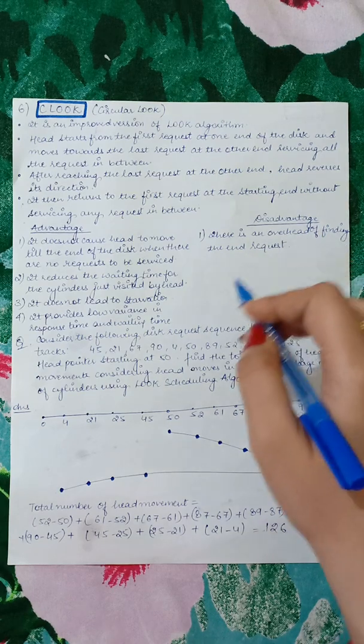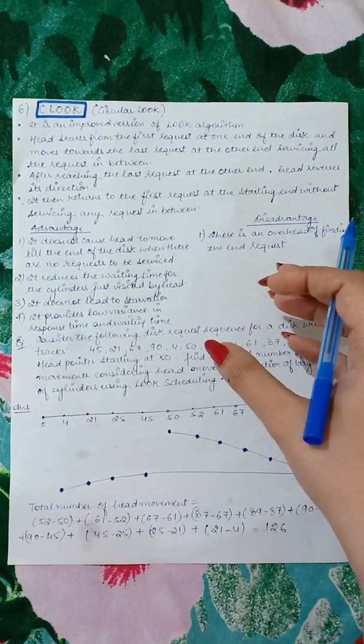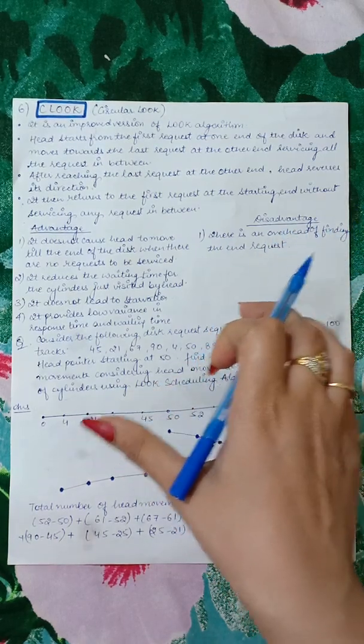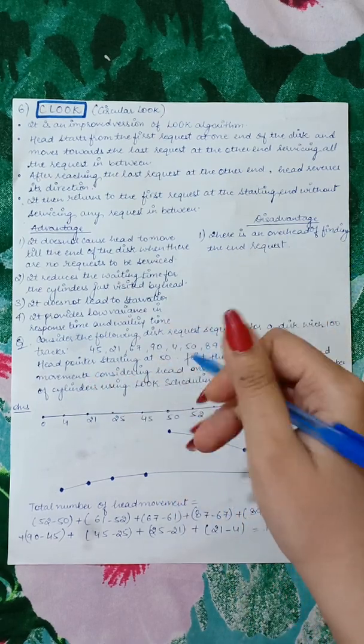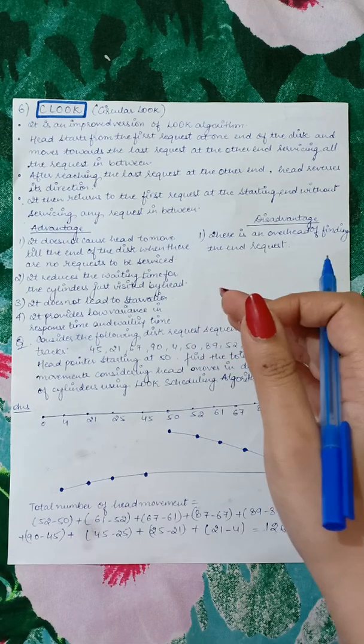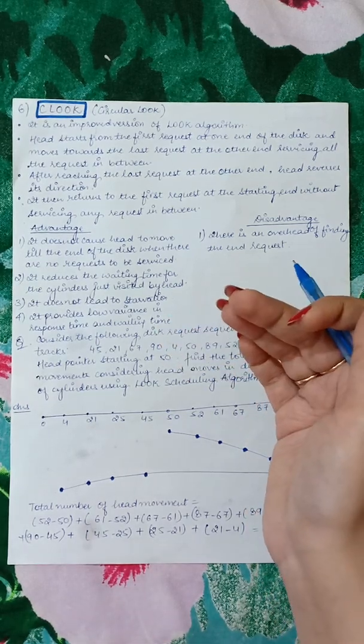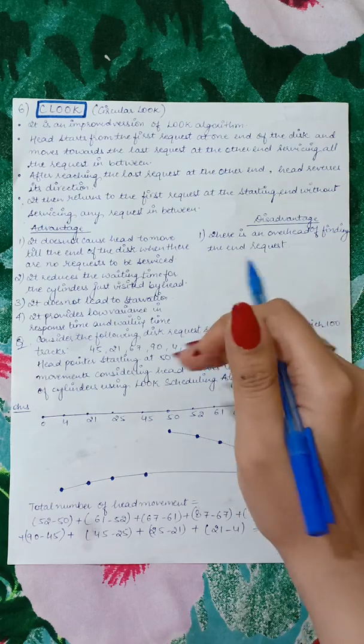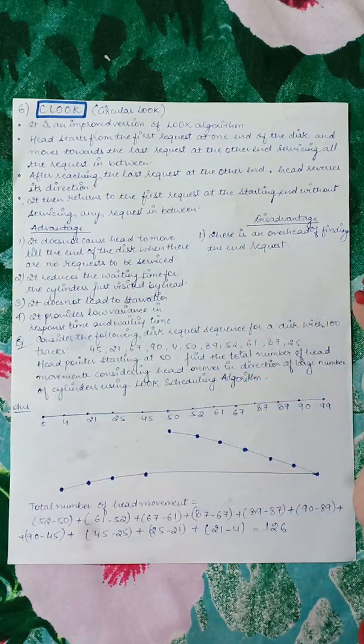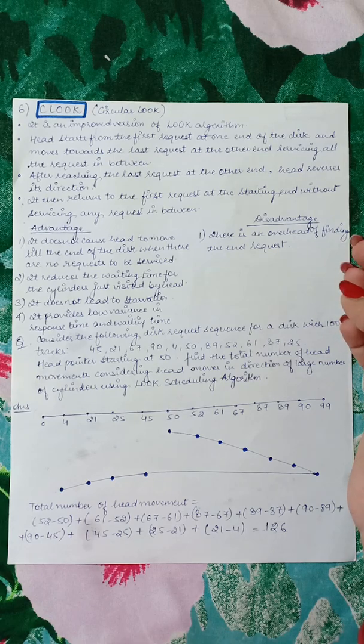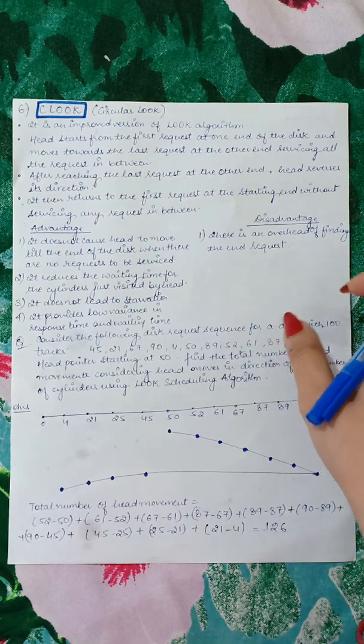The disadvantage is that there is an overhead of finding the end request. It will have to be found which is the last request. This is a static picture, so I have already given that there are so many disk requests. But in real life, there will be multiple requests from many programs at the same time, arriving continuously. So this picture will change. How will the head get to know which is the last request that it will service? So that is the disadvantage - you will not be able to find the last request easily. Next we will do a numerical on this.